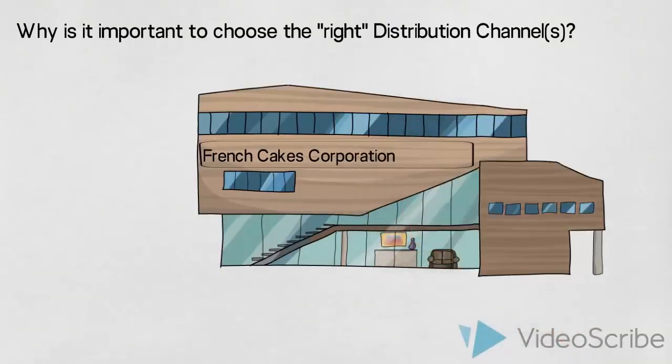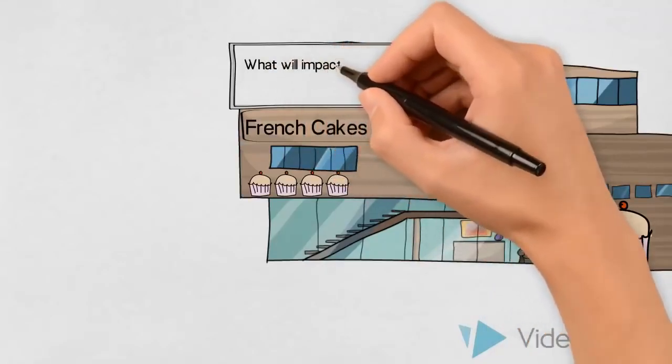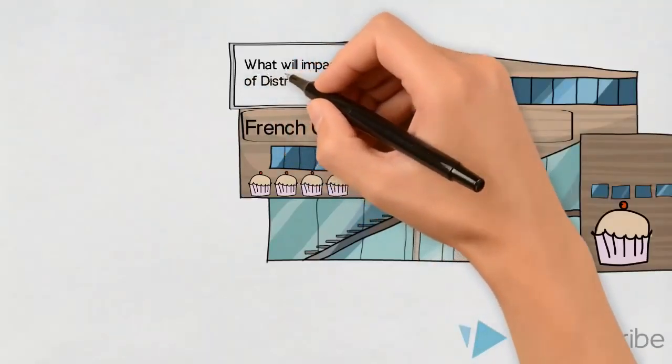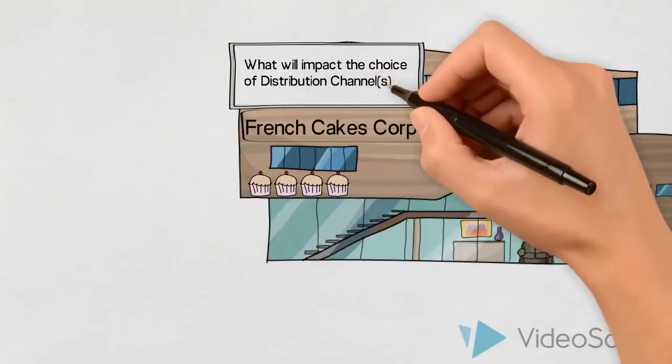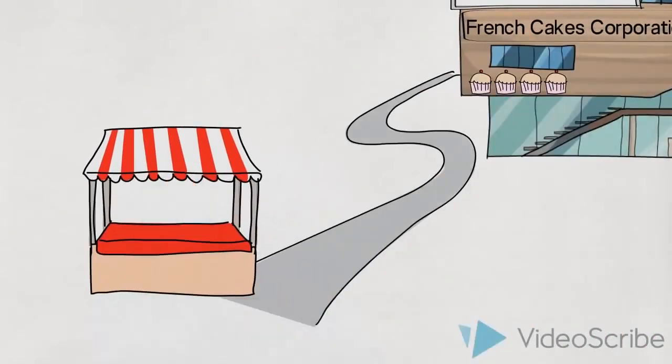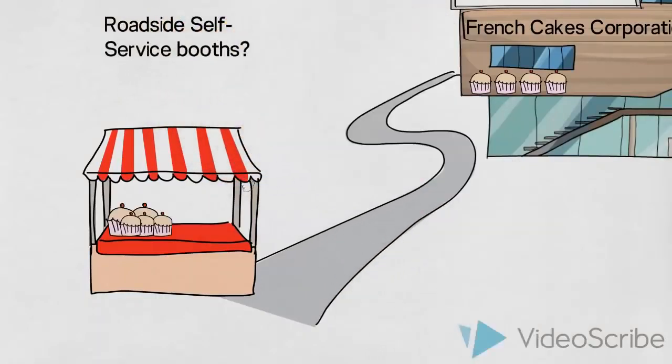What will impact the success of the chosen distribution channels, and subsequently which considerations are relevant when making their choice of distribution setup? Let us imagine that they had the idea of selling their cakes and desserts in rural areas through roadside self-service booths where customers were expected to show up and purchase the products without any assistance.